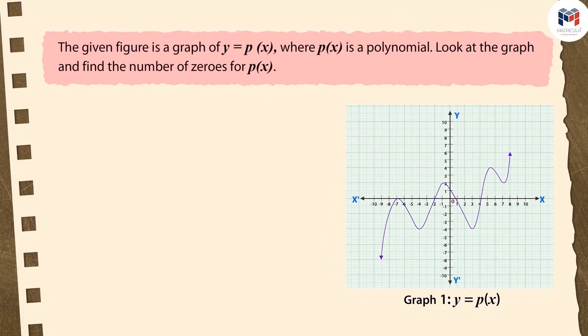Given figure is a graph of y = p(x), where p(x) is a polynomial. Look at the graph and find the number of zeros of p(x). The options are: 3, 1, 5, 4.